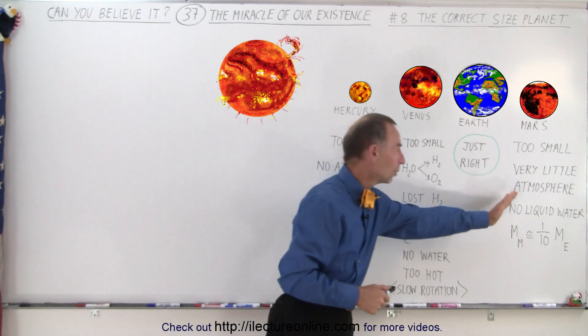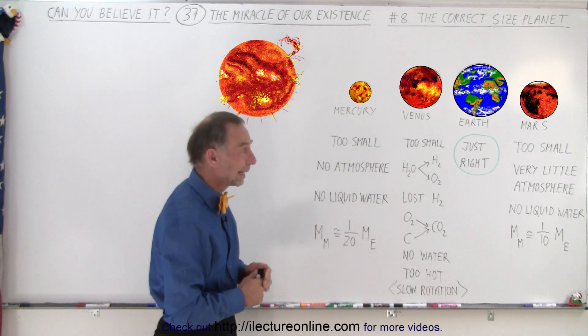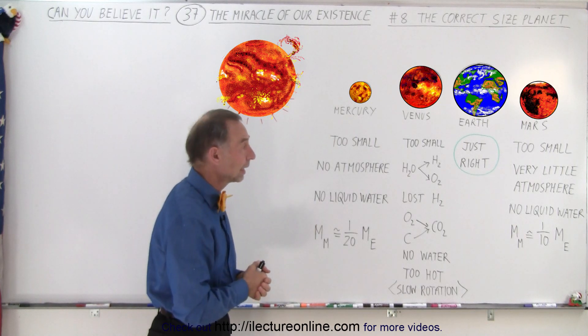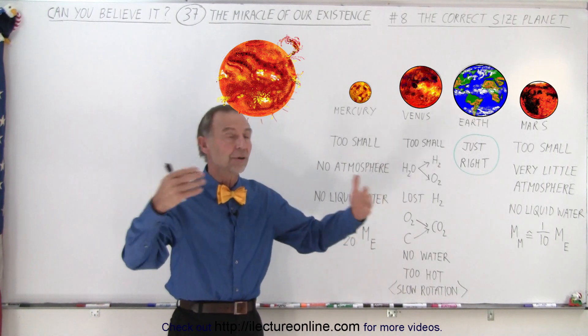When we go to the other side, we have Mars, the farthest terrestrial planet in our solar system. It's also too small. It's about twice the size of Mercury as far as mass is concerned, but the atmosphere is, by and large, has left Mars as well.